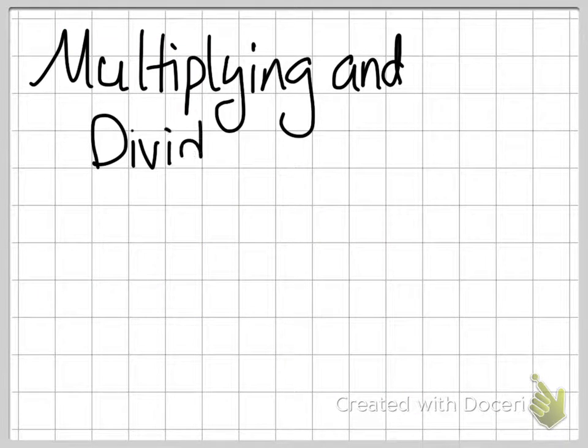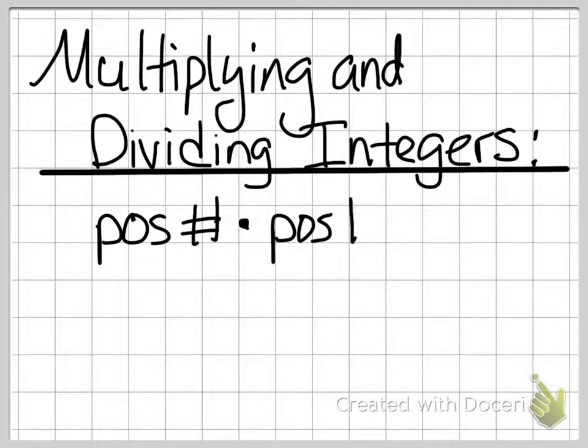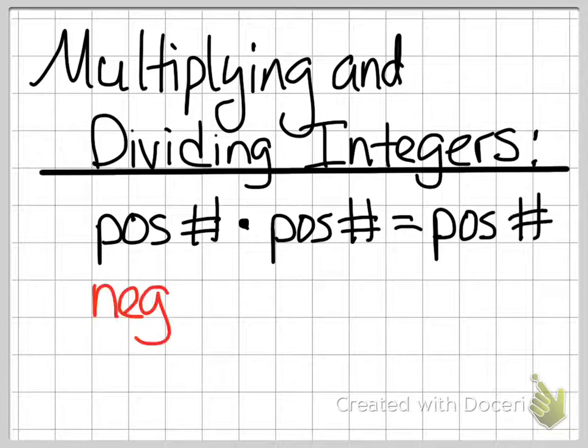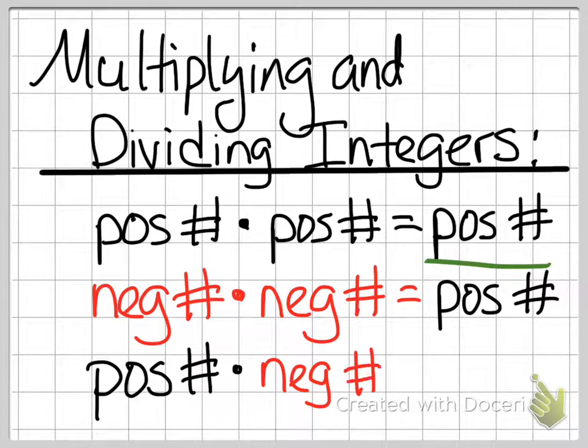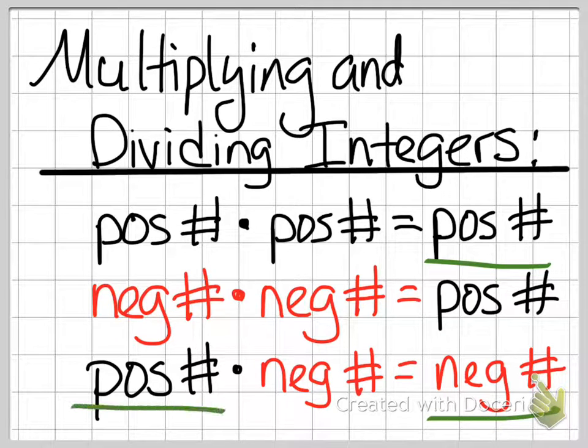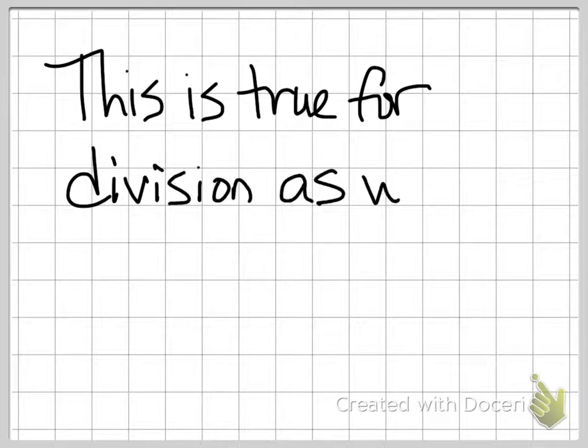Now, what we just went over doesn't apply to multiplying and dividing integers. There are three simple rules that you just have to know. Positive times positive equals positive answers. Negative times negative equals positive answers. The only combination that gives you a negative answer is when you have a positive times a negative, or a negative times a positive. Because remember, commutative property tells us it doesn't matter the order in multiplication. This is true for dividing integers as well.